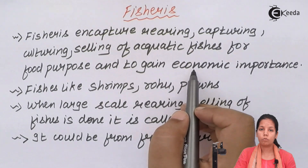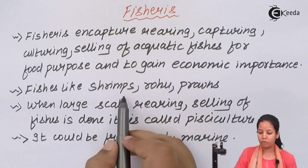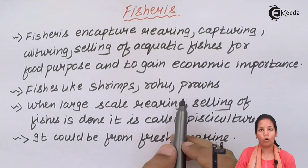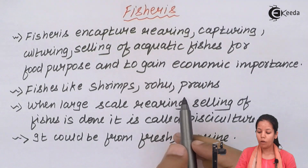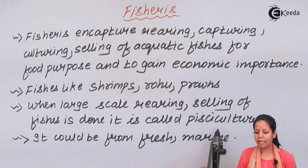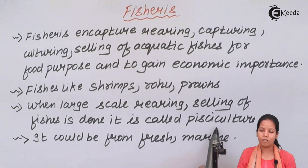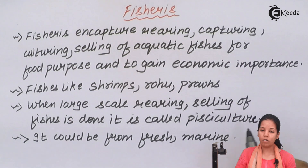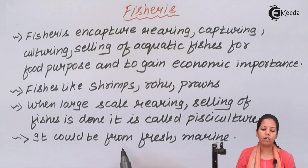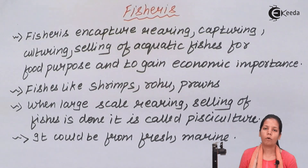These fishes could include various types such as shrimps, etc. Some are found in freshwater, some in salty water, depending upon the region they are grown. When large-scale production, rearing, and selling of fishes are done, it is termed as Pisciculture. Pisciculture can be done in freshwater, salty water, or brackish water depending upon the region.